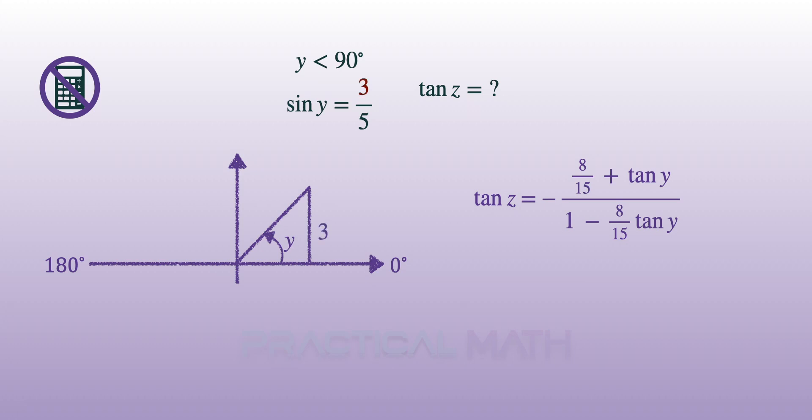Using the Pythagorean theorem, we find the adjacent side to be 4. Tangent Y therefore equals 3/4, where 3 is the opposite side and 4 is the adjacent side. We then replace tan Y with 3/4 in our workings.